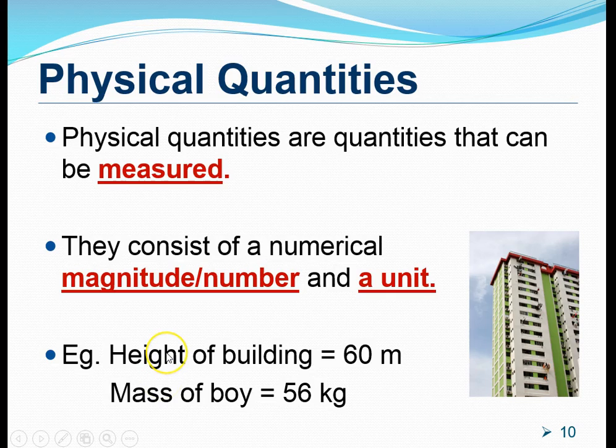Now let's try to understand the very first concept, Physical Quantities. What are Physical Quantities? Physical Quantities are simply quantities that can be measured. Any quantity that can be measured, we call these quantities Physical Quantities. And take note, Physical Quantities are actually made up of two items. First, it's actually a magnitude, a numerical magnitude or number, and a unit.